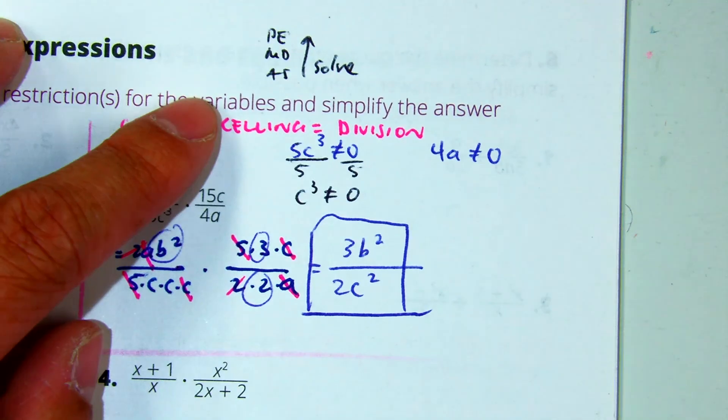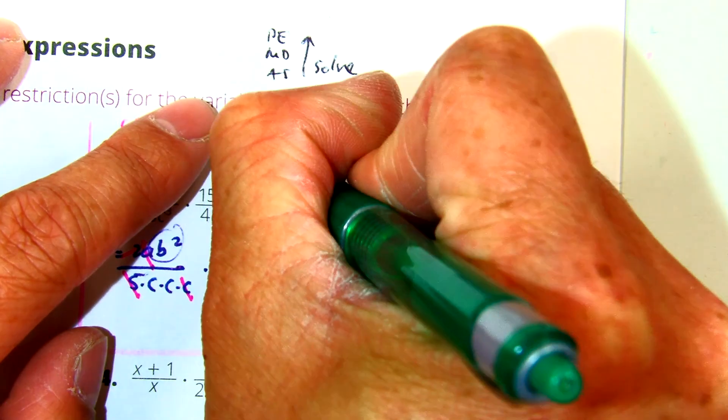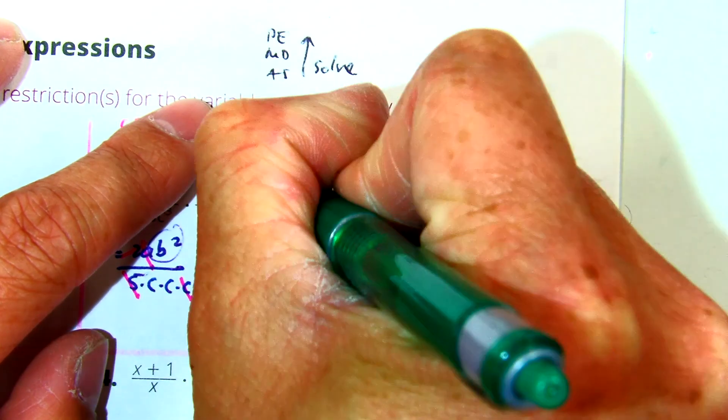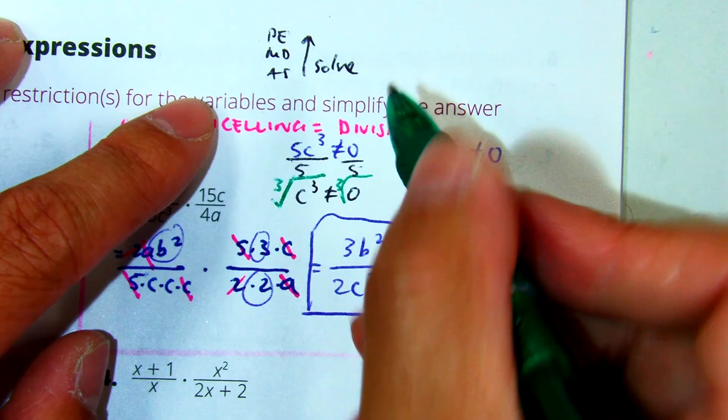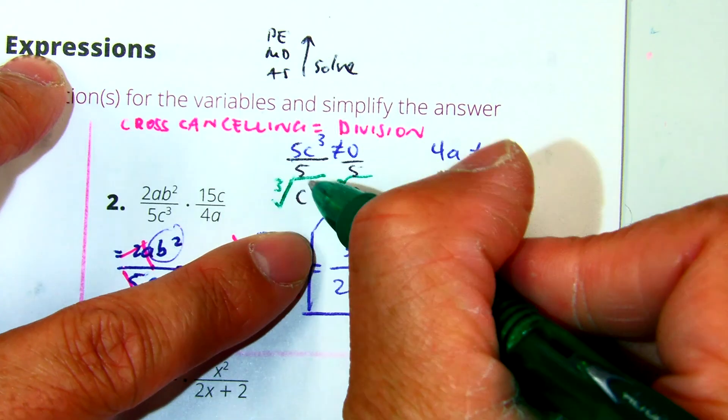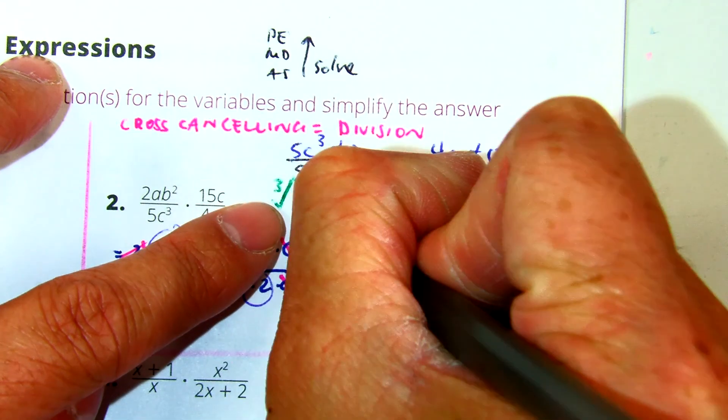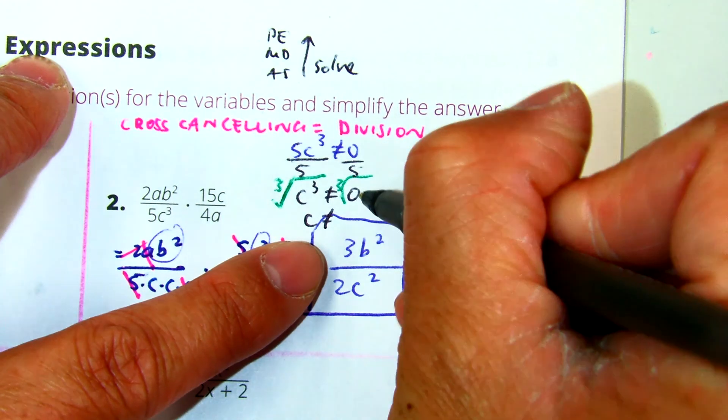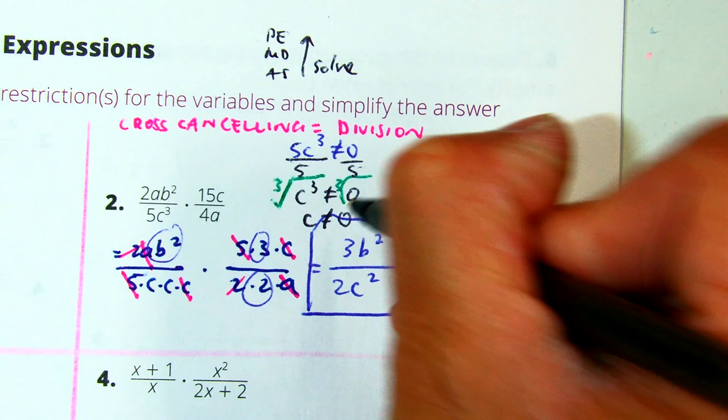Now, I can take the cube root. This becomes C. So, the index and the exponent cancel. And you're left with C is not equal to... Class, what are three identical numbers that multiply to be 0? To 0. So, C is not equal to 0.